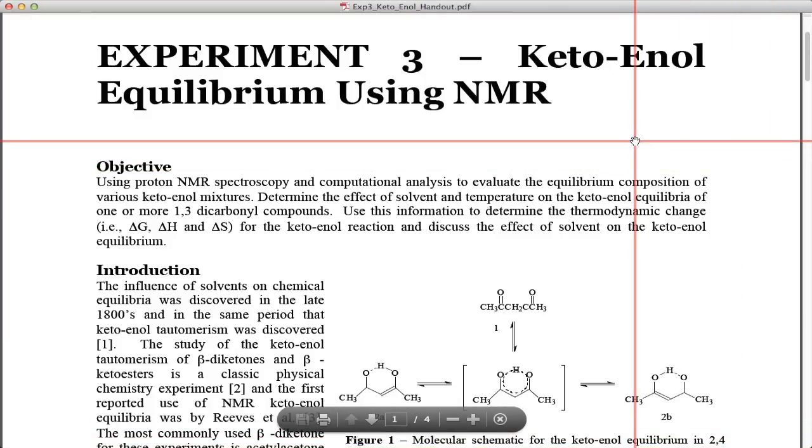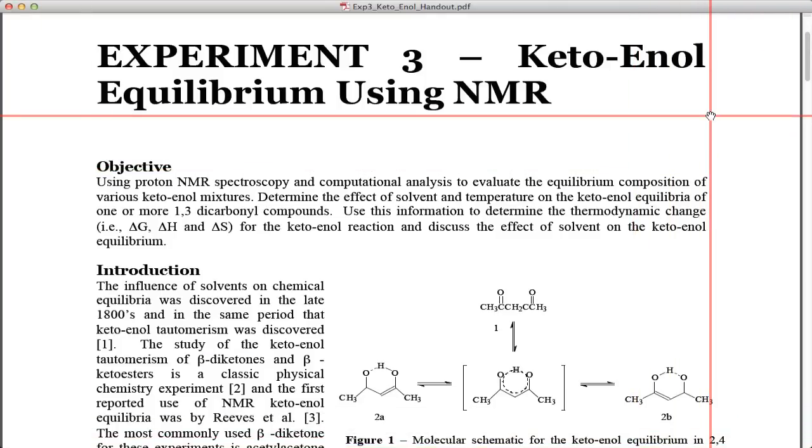Hello and welcome to another edition of P-Chem Lab Screencast. I'm Professor Jeff Yarger and today we're going to briefly describe in Chemistry 343 at Arizona State University what we typically do for experiment number three which is an enol ketone equilibrium and we usually use NMR to look at this equilibrium.